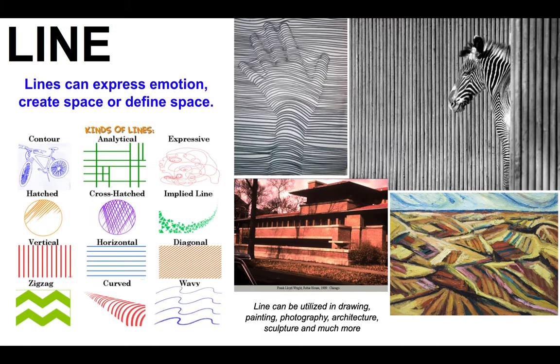The first element of art is line. Elements of art are things that all art contains — you can see these things in the artwork. Line is one of those tricky things to define, but I like to define it as something that expresses emotion, creates space, or defines space. Different styles of lines can create moods or emotions. For example, a really bold, heavy, dark zigzag angry line is going to show anger, versus a really soft, wavy, flowy line that might feel serene and calm.